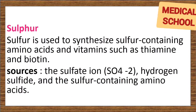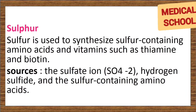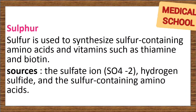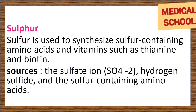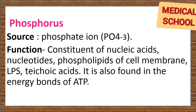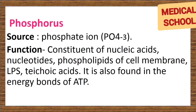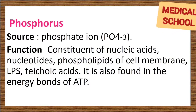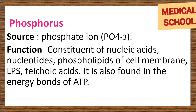Sulfur is used to synthesize sulfur-containing amino acids and vitamins such as thiamine and biotin. Important natural sources of sulfur include the sulfate ion, hydrogen sulfide, and sulfur-containing amino acids. Phosphorus: a key source of phosphorus is the phosphate ion. Its functions include being a constituent of nucleic acids, nucleotides, phospholipids of the cell membrane, LPS, and teichoic acids. It is also found in the energy bonds of ATP.